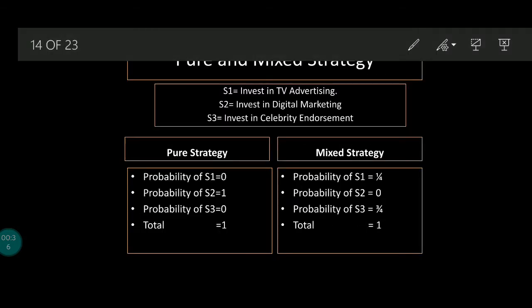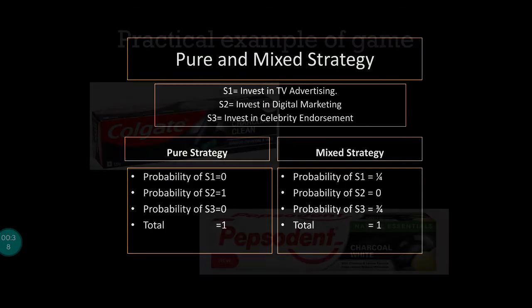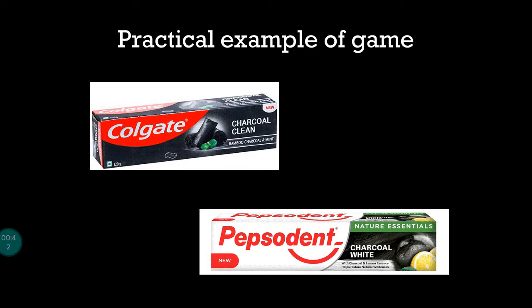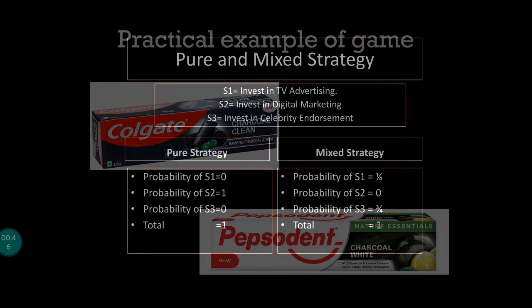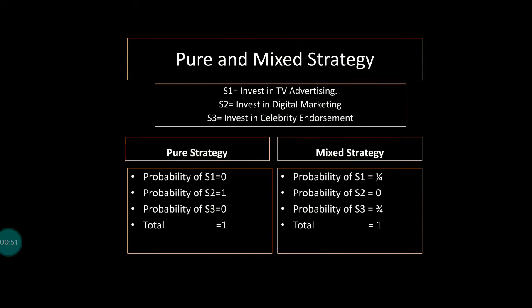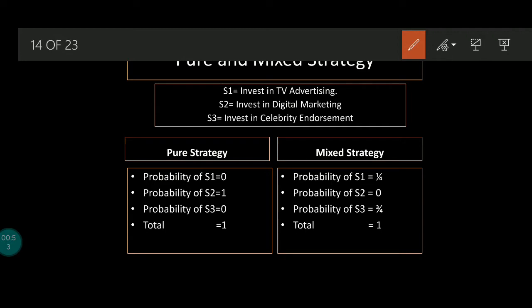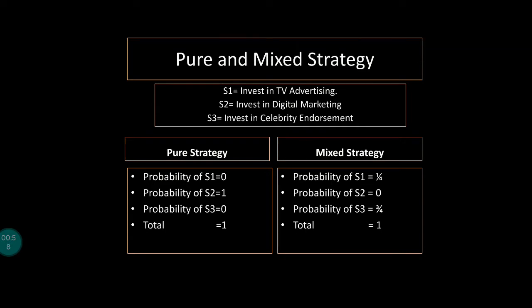Take the example of Colgate and Pepsodent coming out with a new charcoal variant. Both companies can adopt three different strategies: invest in TV advertising, invest in digital marketing, or invest in celebrity endorsement. In the case of pure strategy, the company adopts only one strategy for a long period of time — for example, investing only in TV advertising, or only digital marketing, or only celebrity endorsement.